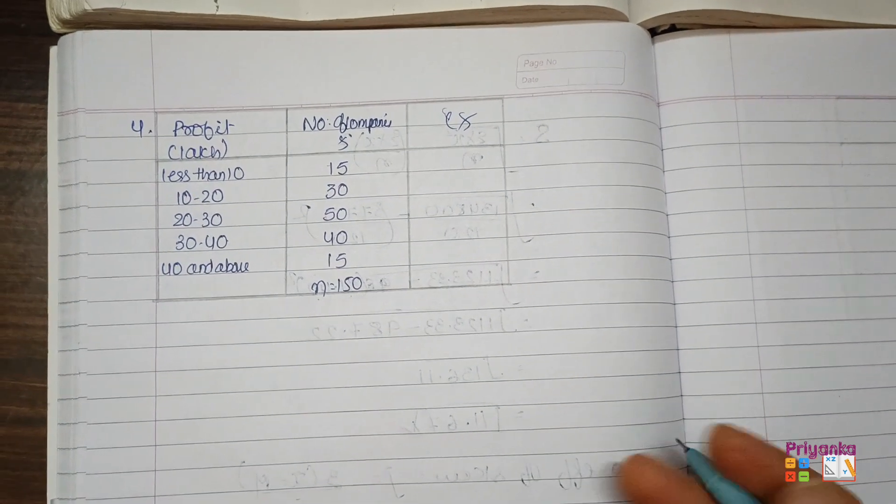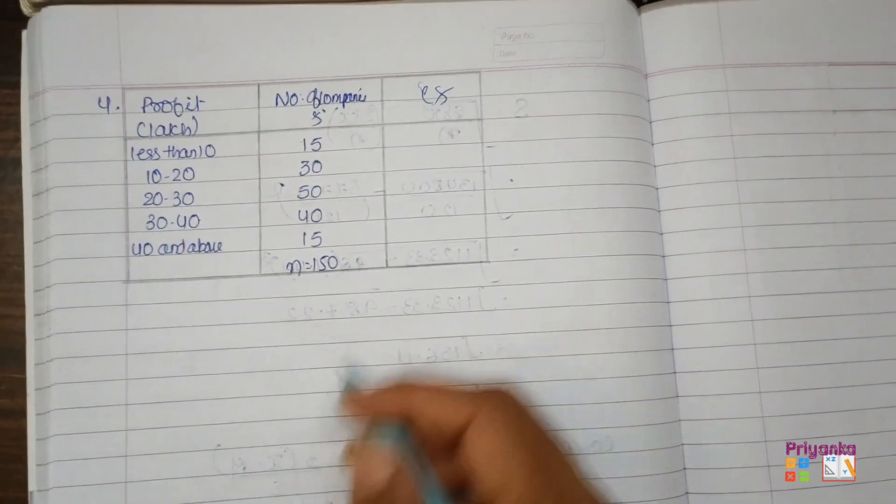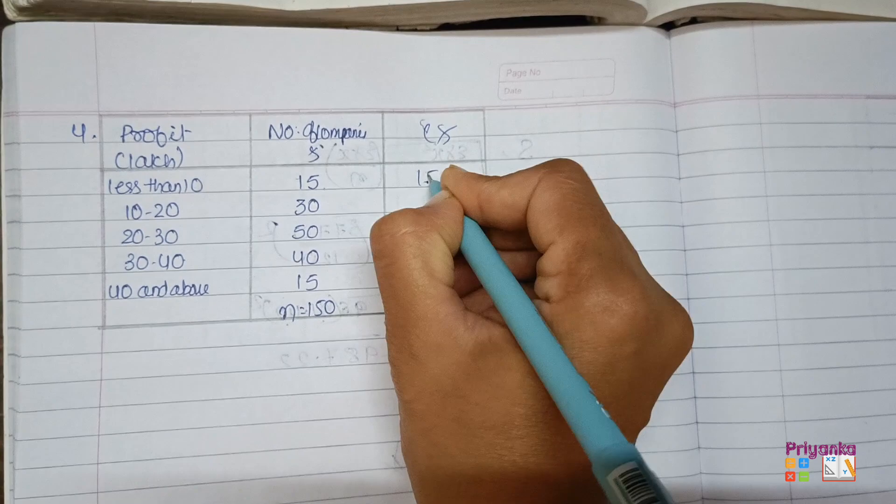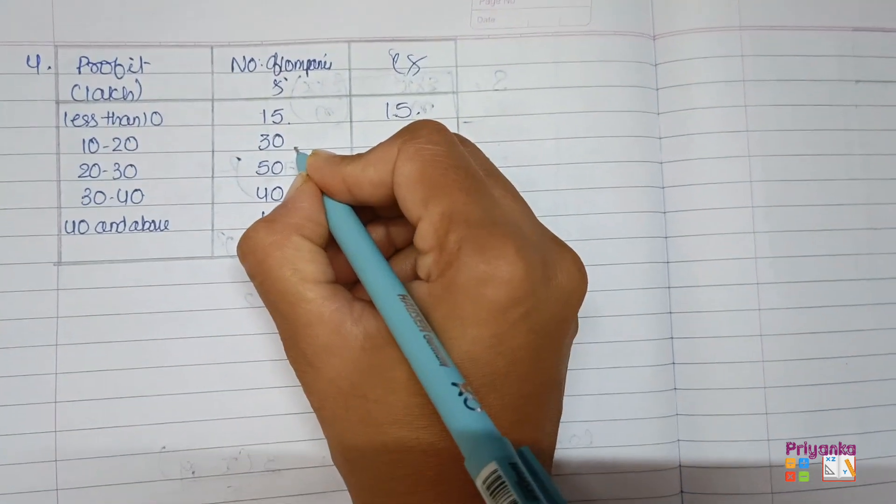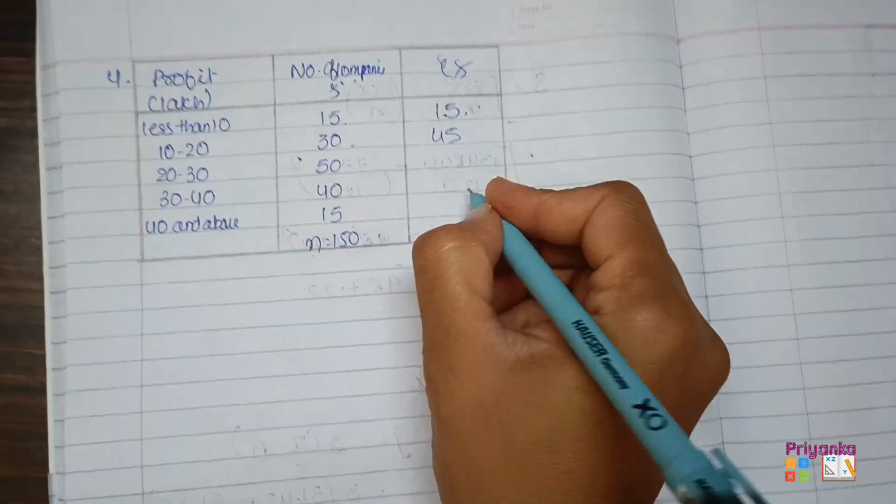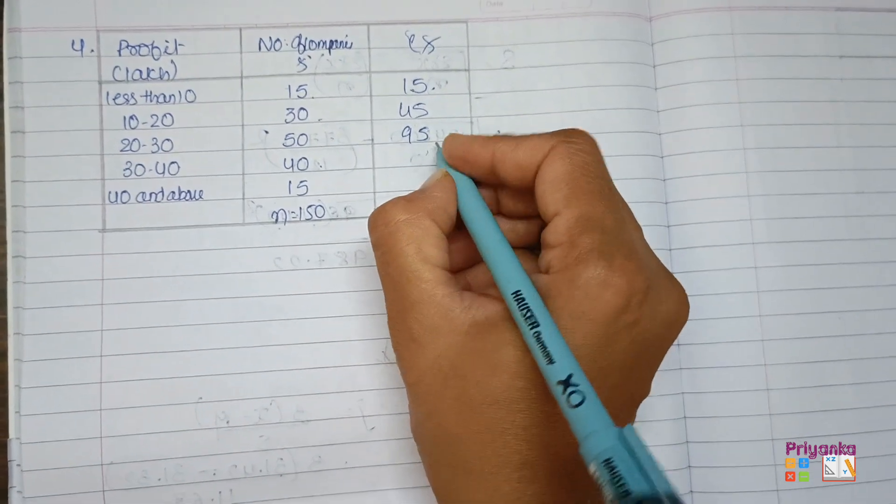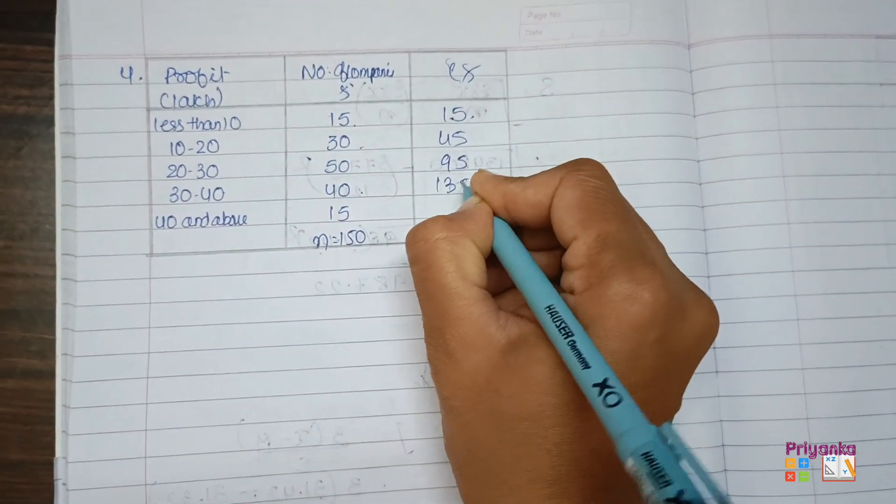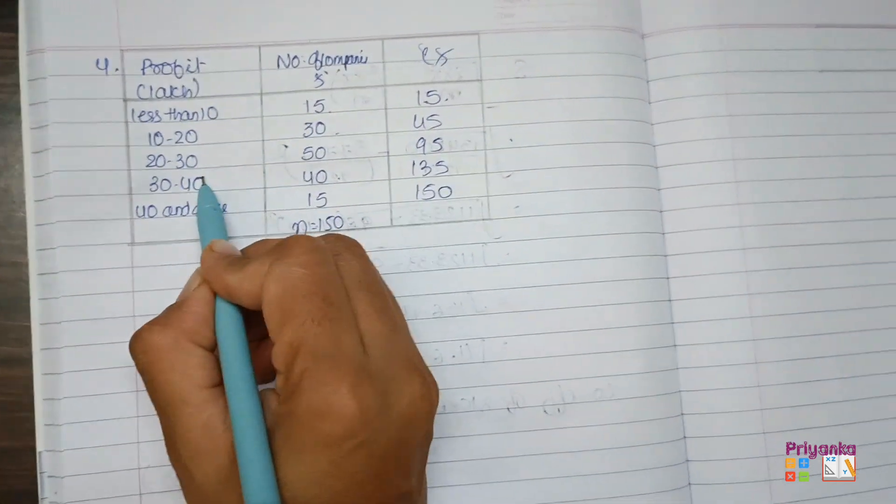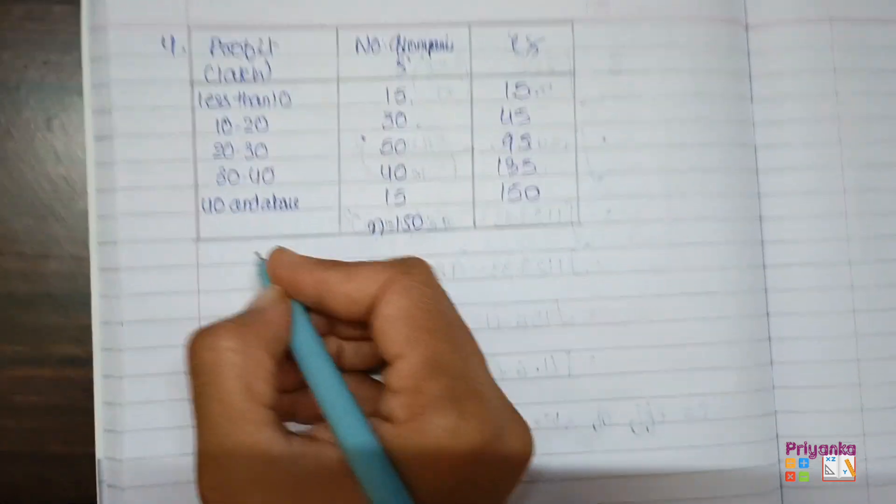Here I am choosing Bowley's method because here I only have to find out CF. Bowley's method me hame Q3, Q1 median nikalna hai to hame sirf chahiye cumulative frequency for this. So just take the cumulative frequency by adding the frequency 15, 15 plus 30, 45, plus 50 that is 95, plus 40, 135, and plus 15, 150. So here my information is ready and as you can see, ye continuous frequency distribution hai to bada wala formula use karenge.